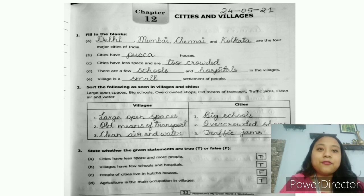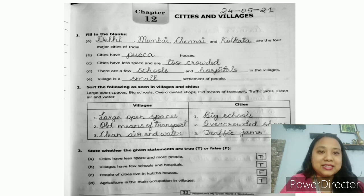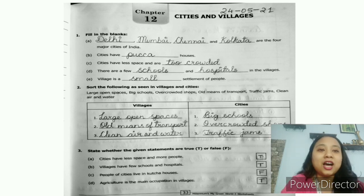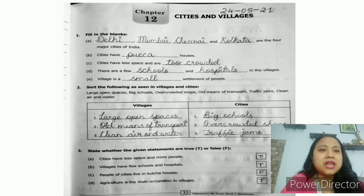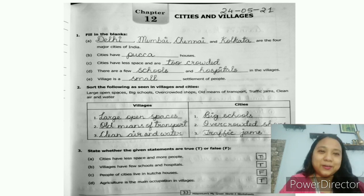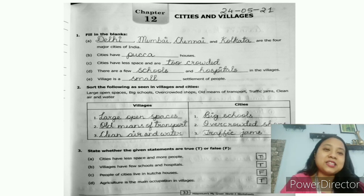Question 1, fill in the blanks. A: Delhi, Mumbai, Chennai and Kolkata are the four major cities of India. B: Cities have pakka houses. C: Cities have less space and are too crowded — yes, cities are very crowded with minimum space, very less open spaces. D: There are a few schools and hospitals in the villages. E: A village is a small settlement of people.